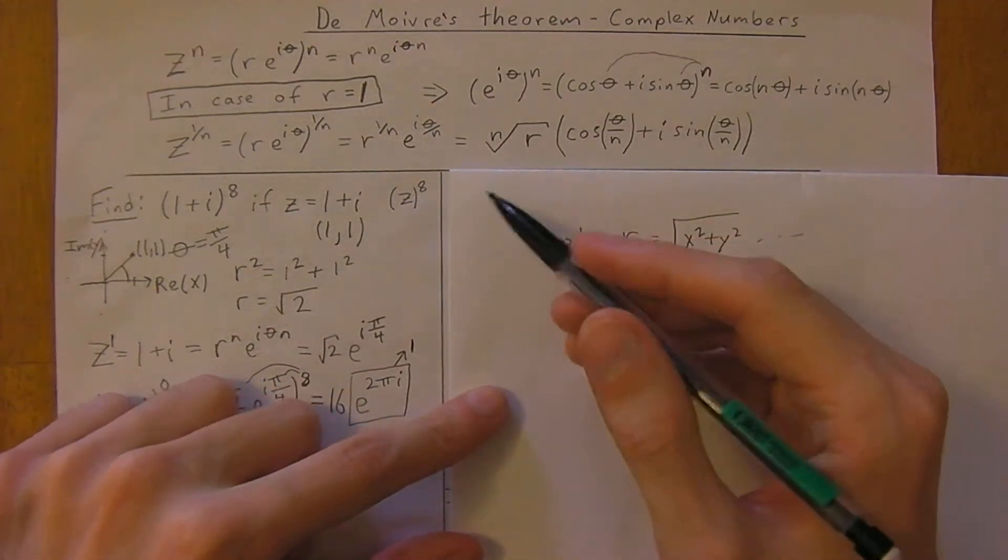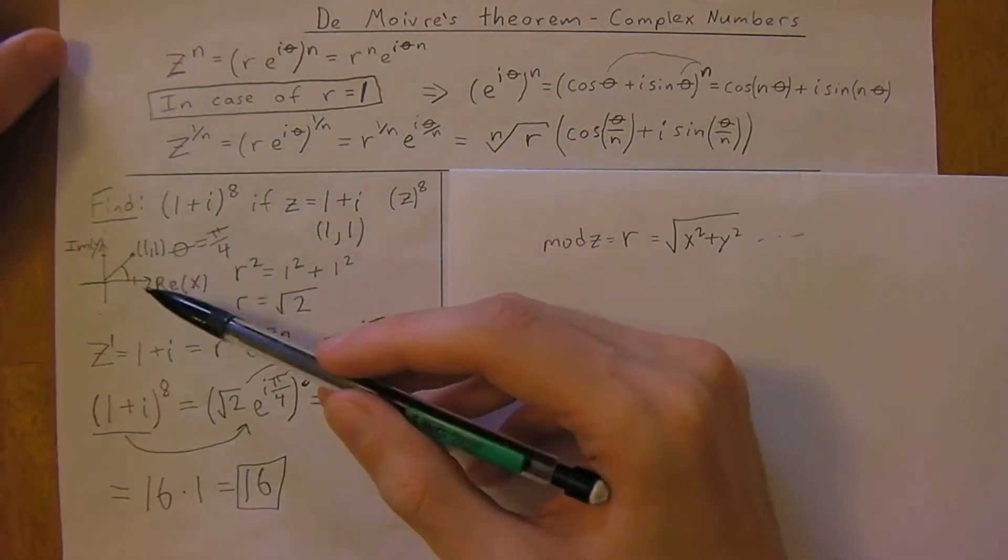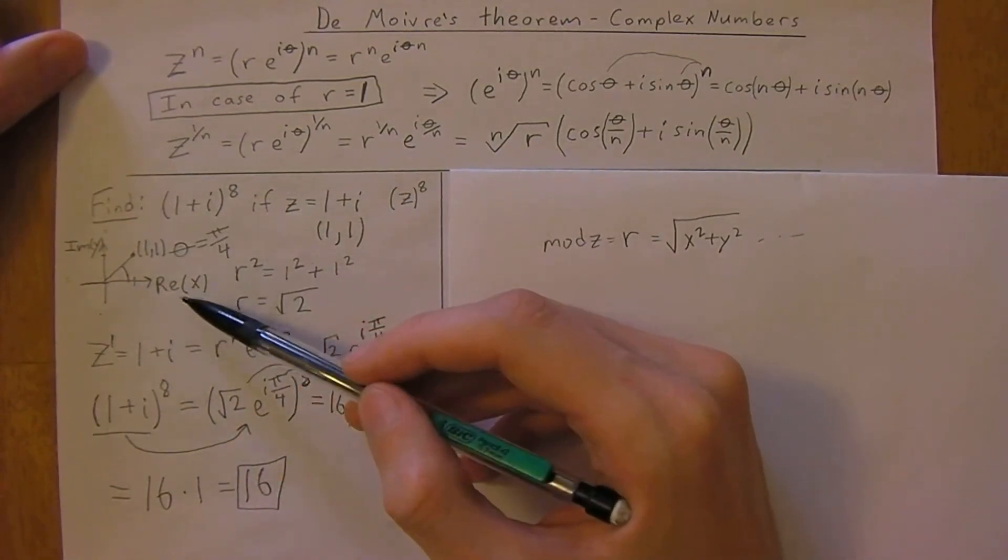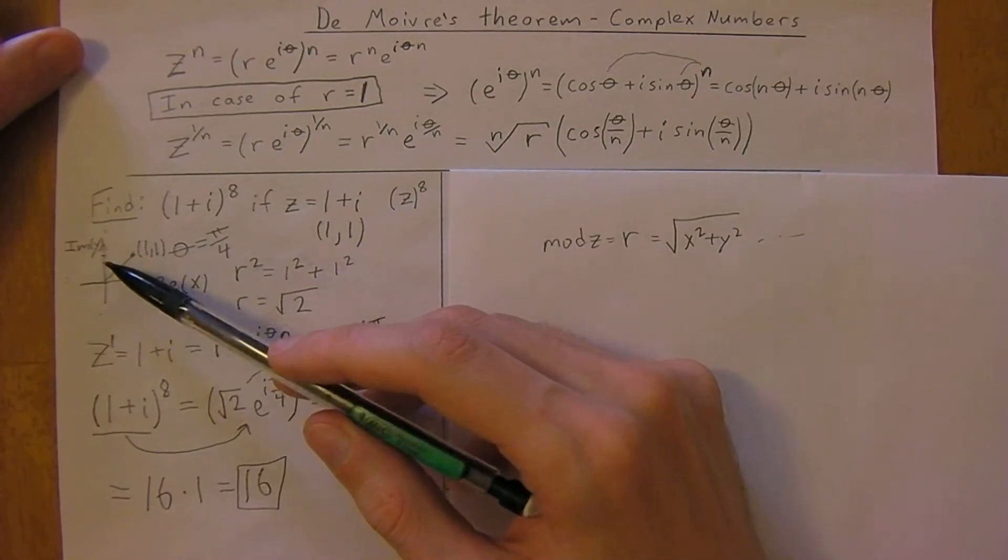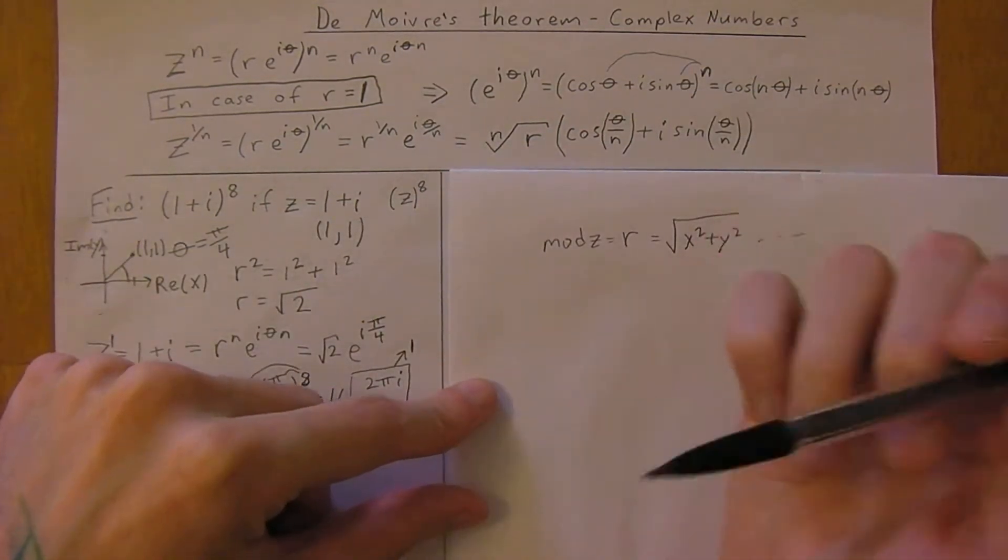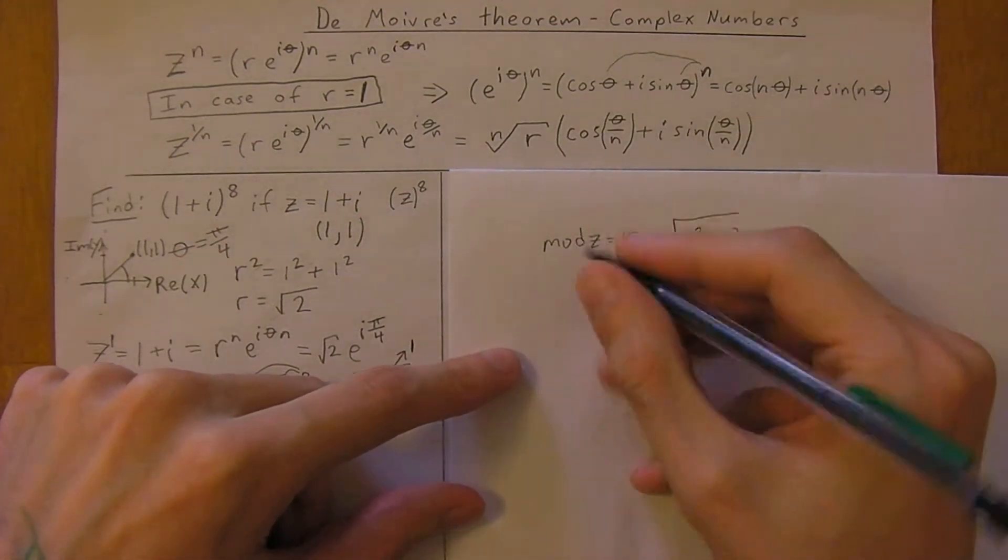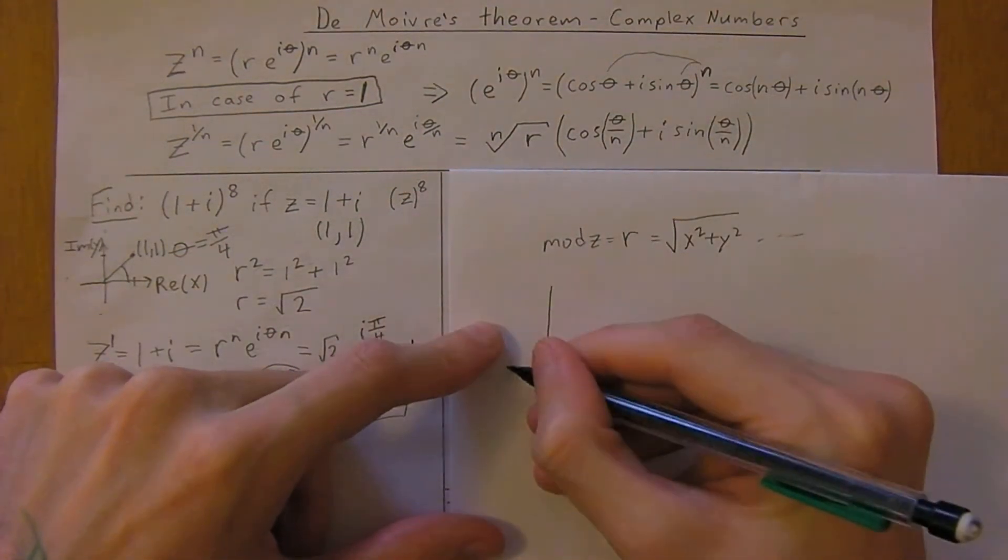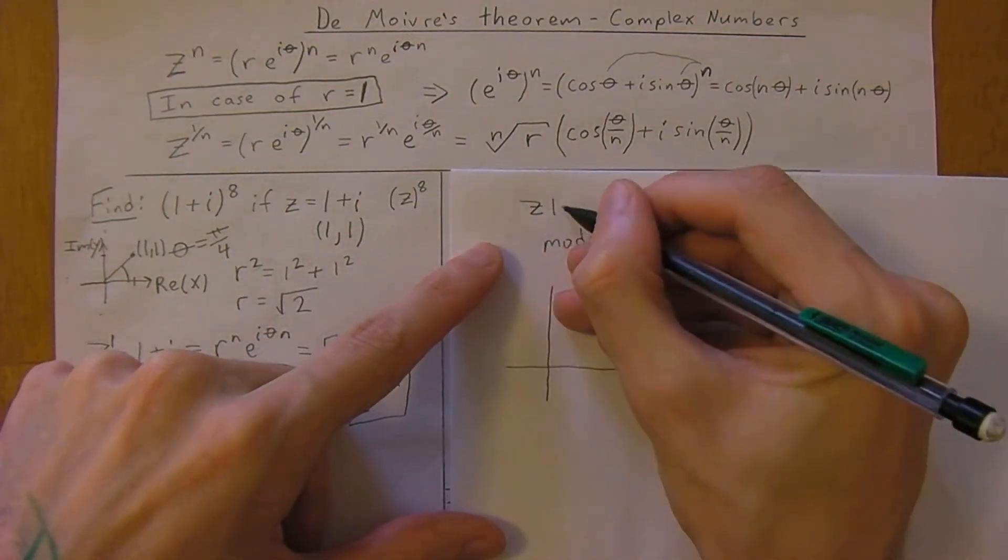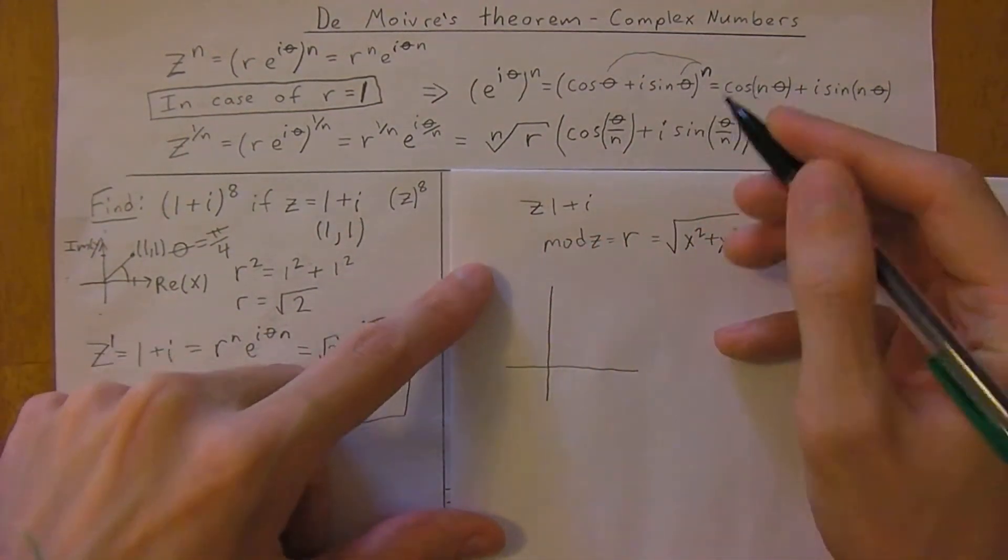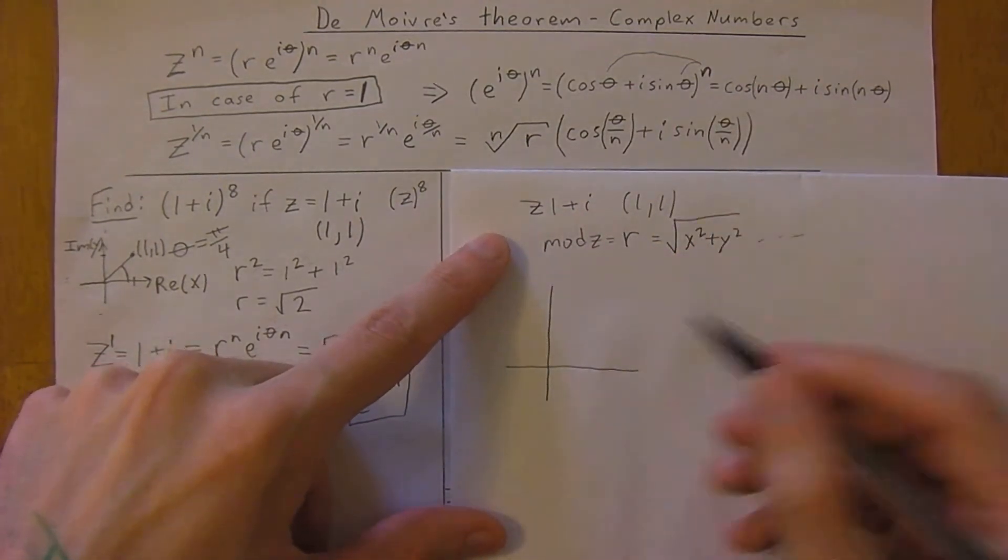The first thing you do is always sketch out your graph. Remember that the x-axis is the real axis and the y-axis is the imaginary. Graphs are your friend. So we have z is 1 plus i, which is the same as the point 1, 1 in the complex graph.